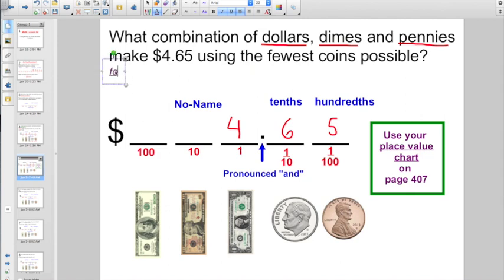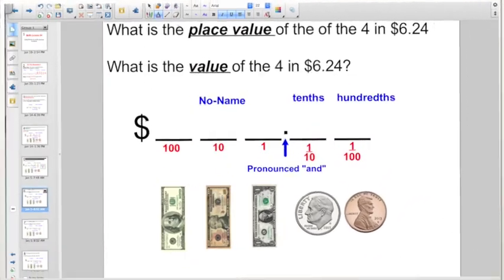So, that's actually going to be the answer that we'd write down. It would be four dollars, six dimes, and five pennies. There is no part that they are asking for, nickels or quarters.